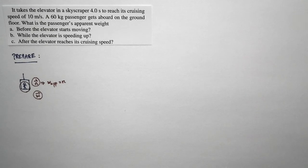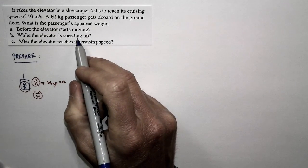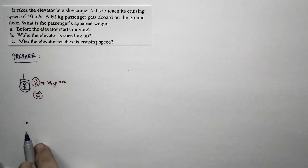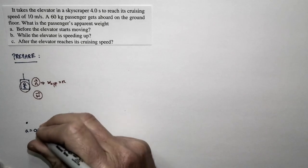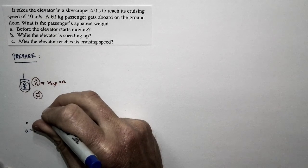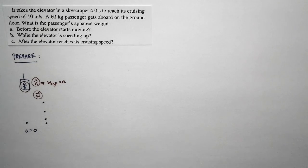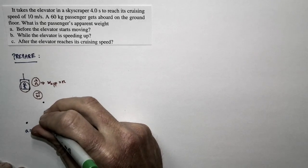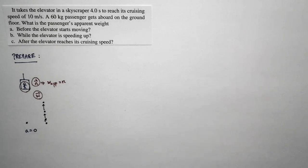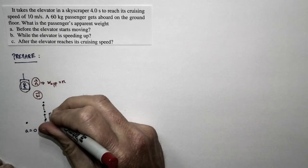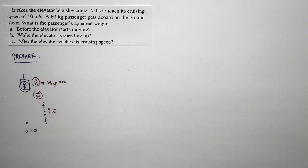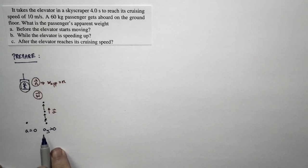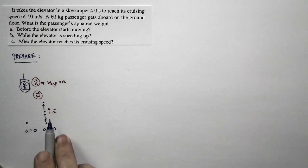Let's do a motion diagram for the elevator for three different cases: A, B, and C. Before the elevator starts moving — case A — it's stationary, so the acceleration is zero. For case B, the elevator is speeding up: successive points get farther apart, velocity vectors increase in length, and as a consequence there is an upward acceleration — a positive acceleration using our conventions.